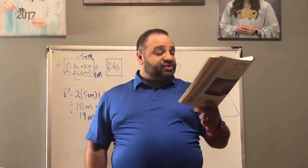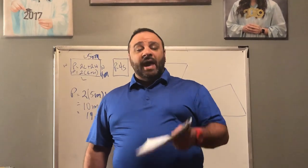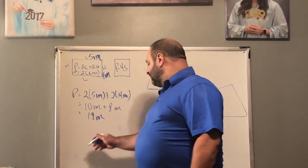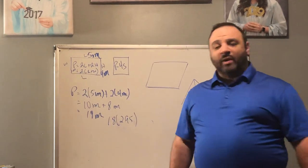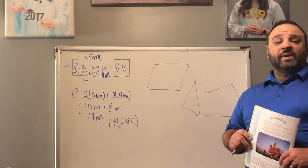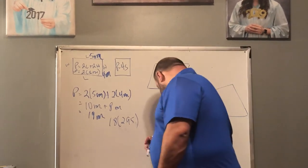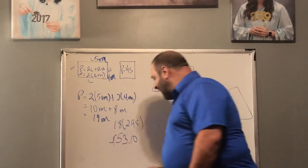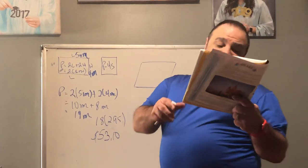We want to find the cost, so Caleb, get your calculator out and compute 18 times $2.95. The answer is $53.10. For homework tonight, make sure you do number five and number seven on that page.